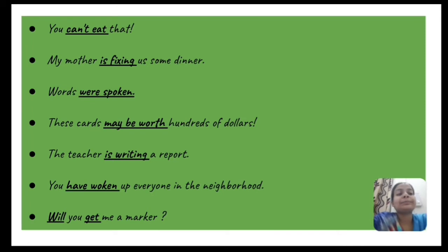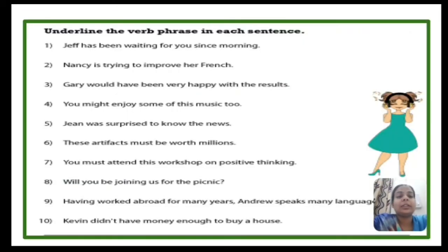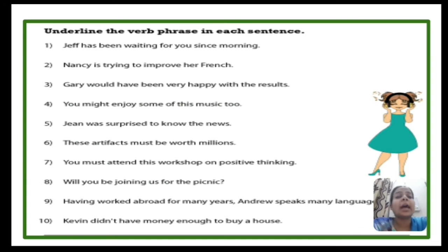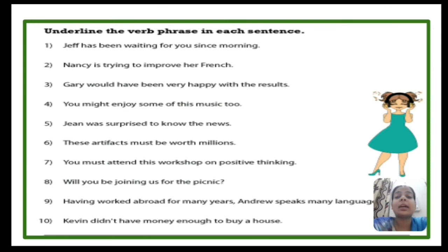Let's do one activity — underline the verb phrases in each sentence. The sentences are: 'Zeph has been waiting for you since morning.' 'Nancy is trying to improve her French.' 'Gary would have been very happy with the results.' 'You might enjoy some of this music too.' 'Gene was surprised to know the news.' 'These artifacts must be worth millions.' 'You must attend this workshop on positive thinking.'